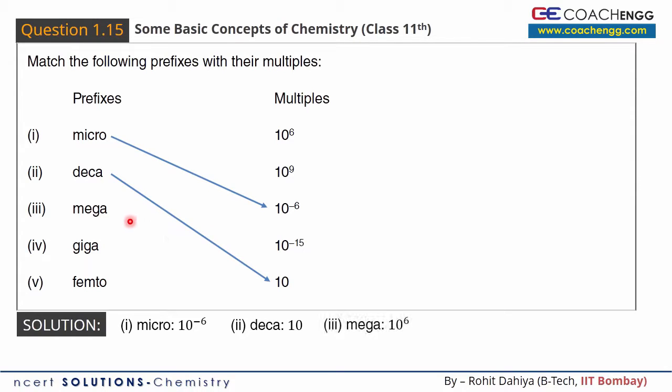Similarly, mega is 10 to the power 6. After that, giga is given. Giga is 10 to the power 9.